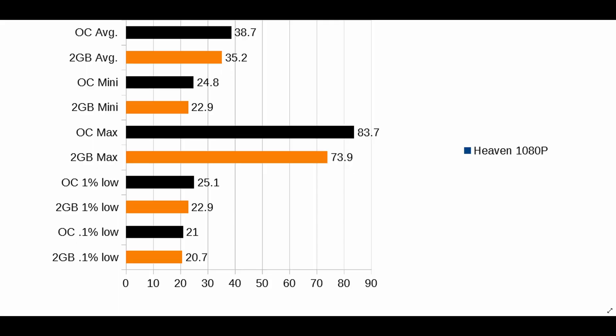What kind of performance change did we get? I actually got some charts for you this time instead of just a notepad layout. Here we're looking at the Heaven benchmark running at roughly 1080p windowed mode. The black bars are the OC and the orange lines are 1900 MHz with 2 GB dedicated VRAM. The average went up to 38.7 from 35.2, minimums up to 24.8 from 22.9, max up to 83.7 from 73.9, and 1% lows up to 25.1 from 22.9. We've seen a decent bump in Heaven.